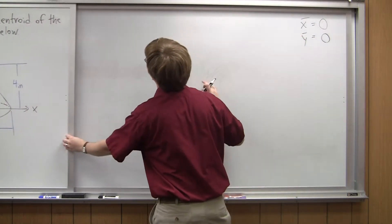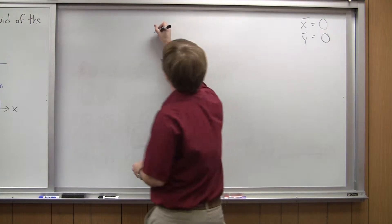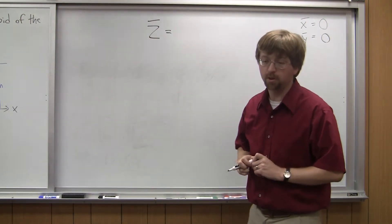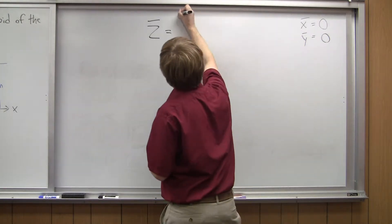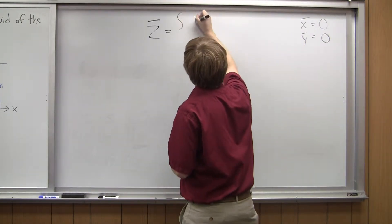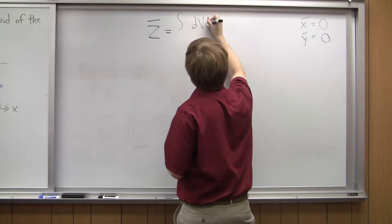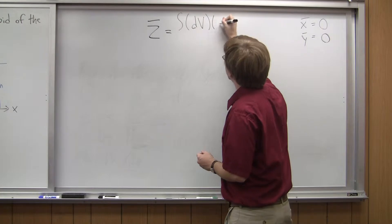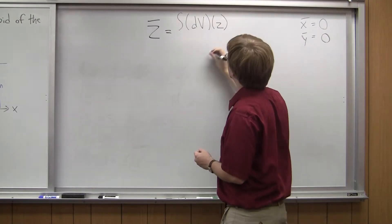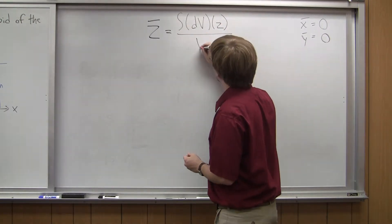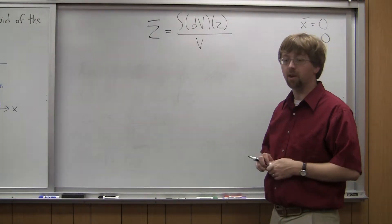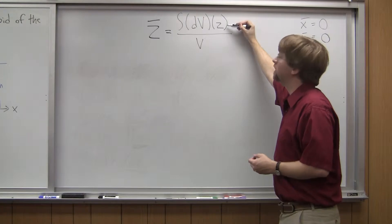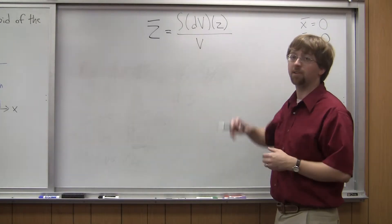For this, I know that my z-bar value is going to be equal to the integral of dv, so that's the change in volume, times z, over the overall volume of my shape. So I can figure out volume of a cone. That's not too hard. Z is just a z-coordinate. I'm going to multiply that into an equation later.